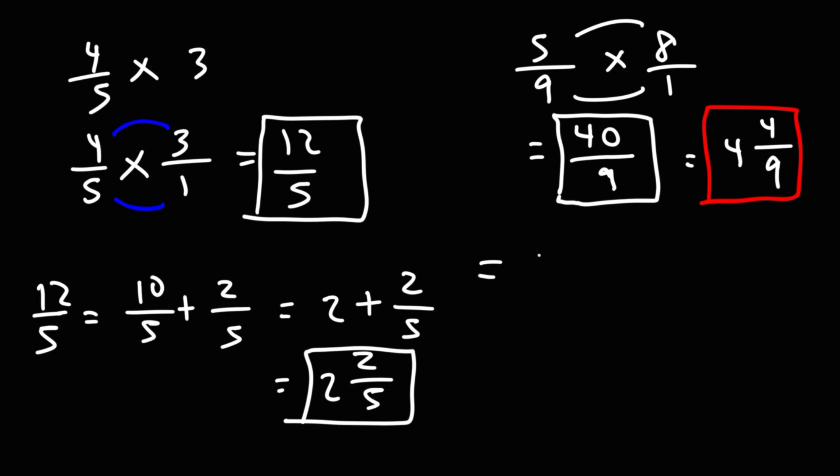You can also do it this way. 40/9 is 36/9 plus 4/9. 36 is the highest multiple of 9, just under 40. 36 divided by 9 is 4, so we get 4 plus 4/9, which is 4 and 4/9. So those are two ways in which you can convert an improper fraction to a mixed number.